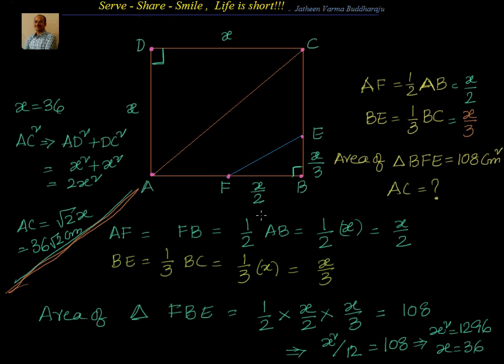We know area of right triangle equal to half into base into height. From that, we are able to find out what is the value of X that is equal to 36. Now by Pythagorean theorem, we know that the diagonal of a square is nothing but equal to X into root 2, or 36 into root 2 centimeter. So that's how we can solve this problem easily.